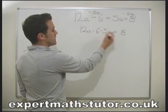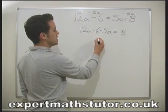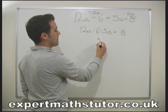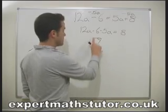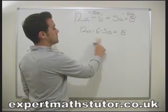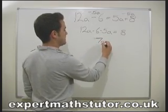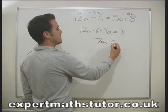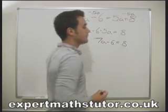12a minus 5a gives me 7a. So 7a minus 6 equals 8.